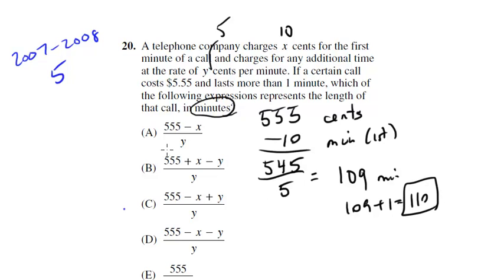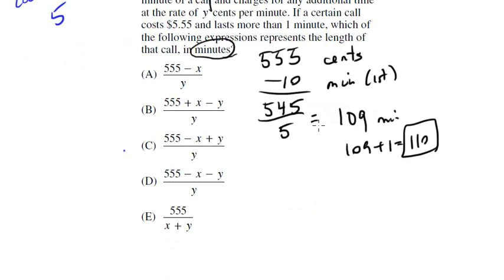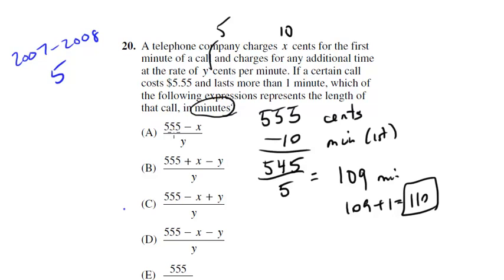So 555 minus X over Y. So 555 minus 10 is 545. And 545 divided by 5 is 109, not what we're looking for. How about this guy? 555 plus X minus Y. So let's see, we got 555 plus 10, which is 565. And then 565 minus 5 is 560. And we're going to divide that by 5. So we divide 560 by 5, what do we get? 112, I think, right? So that's no good. We want to get 110 as our answer.